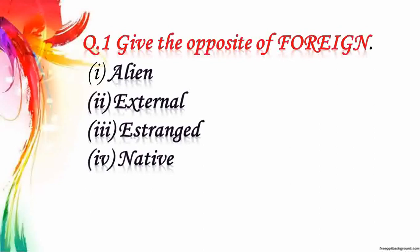Give the opposite of 'foreign'. Option 1: alien. Option 2: external. Option 3: stranger. Option 4: native. Here option 1, option 2 and option 3 have the same meaning as foreign, that is outsider. So the opposite of foreign will be native, that is belonging to the same locality. The right answer is option 4, native.